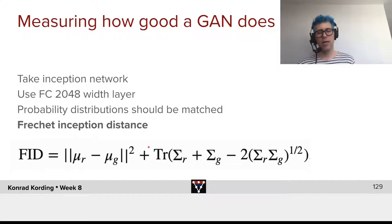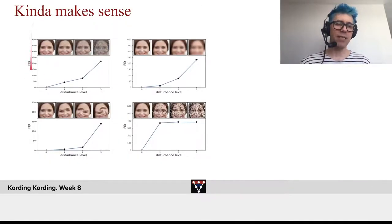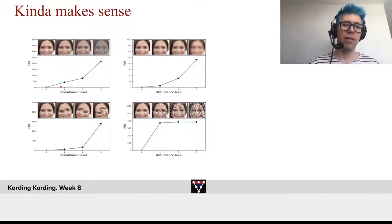Now we can say, how similar are they? First, this FID really makes sense if you apply it. What we have here is FID on this axis versus various different kinds of disturbance levels. We add some color noise. Adding a little bit of color noise, there's a good number of photographs that look like that. But still, the FID goes up. And then if we add a lot of noise, the FID goes up an awful lot.